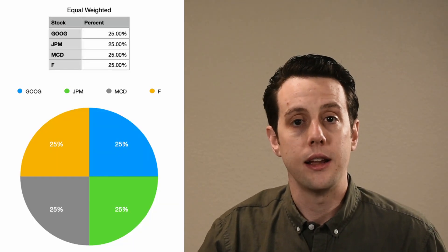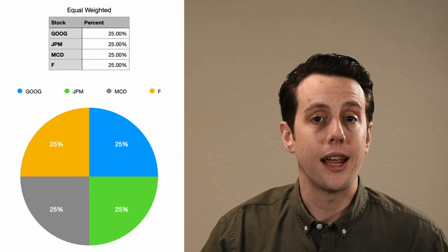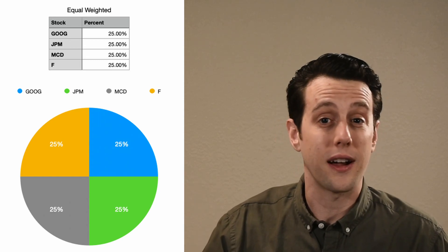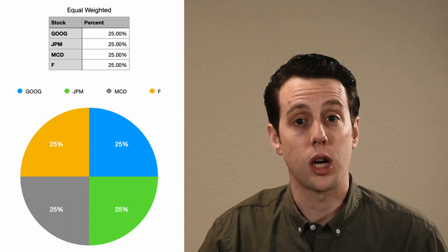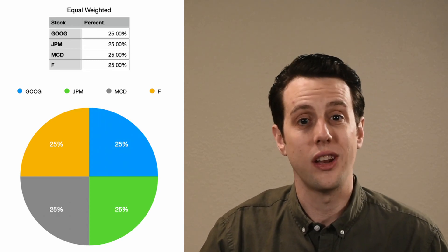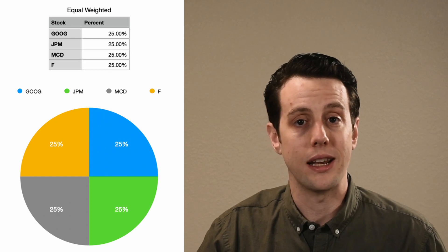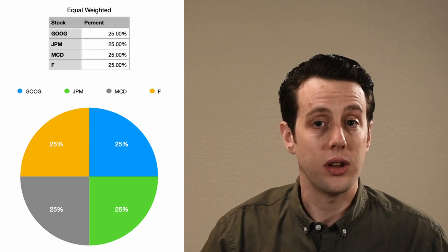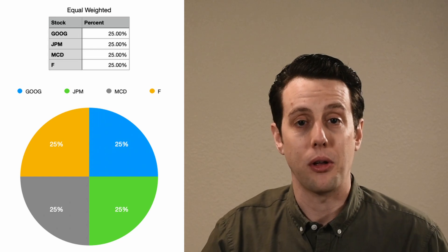The most naive way for weighting our index would just be to put 25% in each company. This is what's called an equal weighted index. It's very simple, but it isn't a great way to allocate capital.